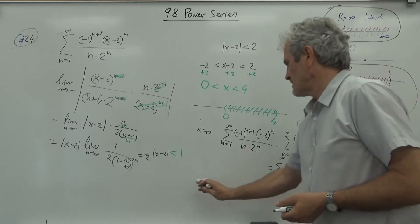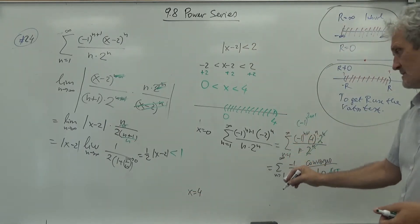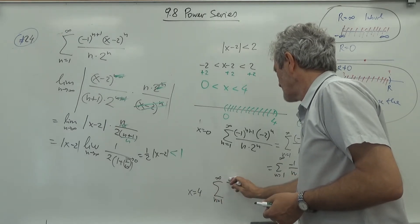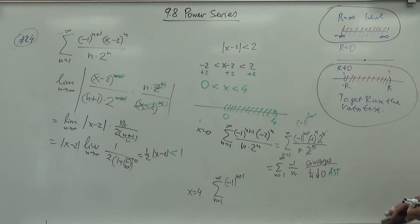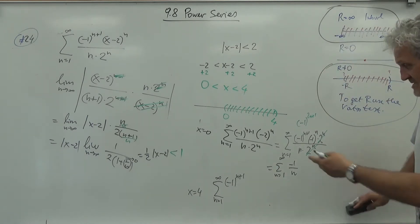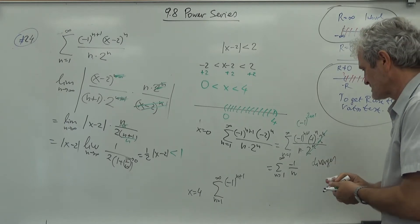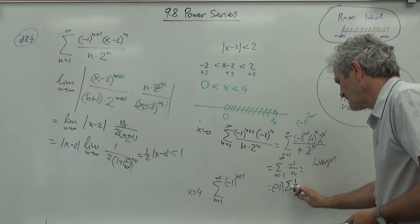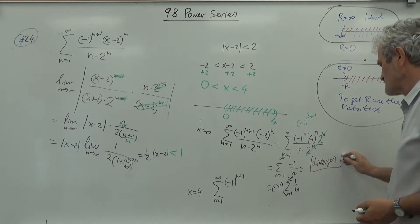The 2^n terms cancel, and combining the signs gives (-1)^(2n+1) which is always -1 since 2n+1 is odd. So we get the sum of -1/n from n=1 to infinity, which is negative the harmonic series. This diverges.